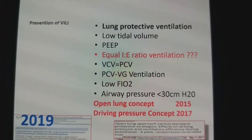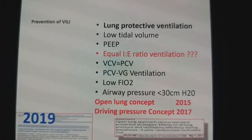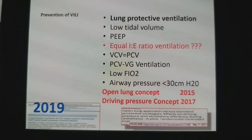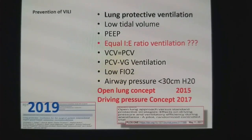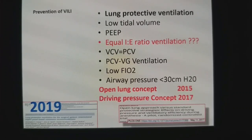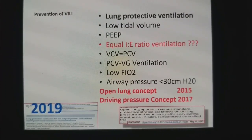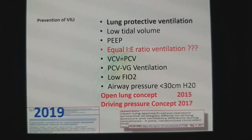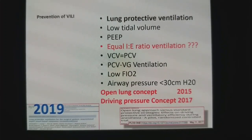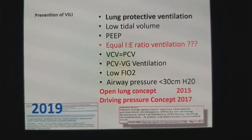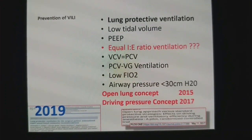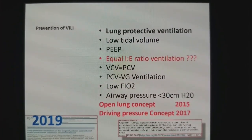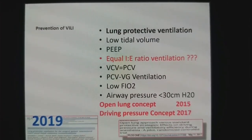So what should we use — IE ratio equal (1:1) or 1:2? I will make it clear. If you are managing an obese patient, use IE ratio 1:1. By using IE ratio 1:1, you are able to minimize and decrease the airway pressure. In a normal weight patient, you should use IE ratio 1:2, because a recent study conducted in normal weight patients did not find a significant difference in postoperative pulmonary complications between IE ratio 1:2 versus 1:1. You can use either volume control or pressure control ventilation, but limit your airway pressure to less than 30.